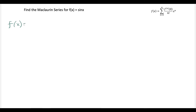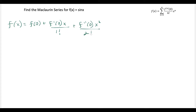We'll start off with this question: we want to find the McLaurin series for f of x equals sin x. When you start with this formula, one thing you want to be able to do is write this formula for the McLaurin series in expanded form. So what this means is we have the nth derivative at 0 times x to the n over n factorial, and it's the series going from 0 to infinity.